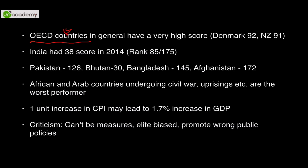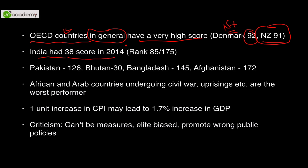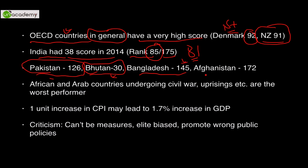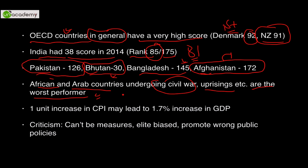OECD countries generally have very high CPI scores. Denmark is ranked first with 92, New Zealand has 91. India had a score of 38 in 2014, ranking 85 out of 175 countries. Pakistan ranks 126, Bhutan has a very good rank of 30, Bangladesh is 145, and Afghanistan is 172 — one of the worst performers. African and Arab countries undergoing civil war, uprisings, and government upheaval are the worst performers overall.